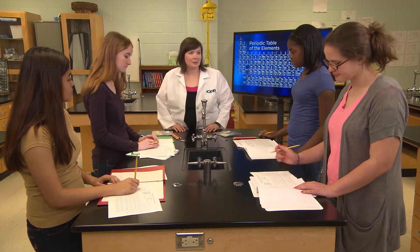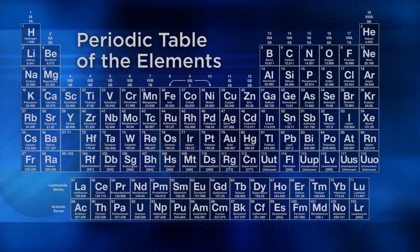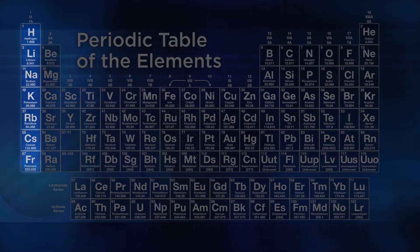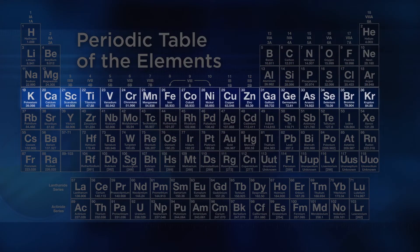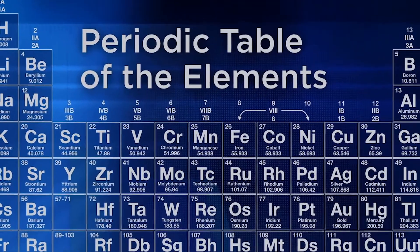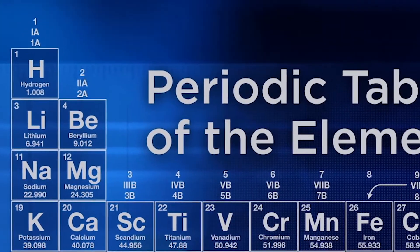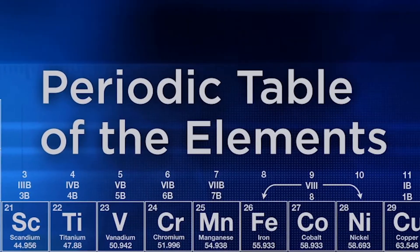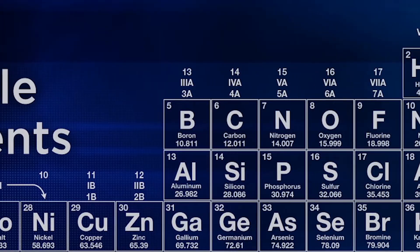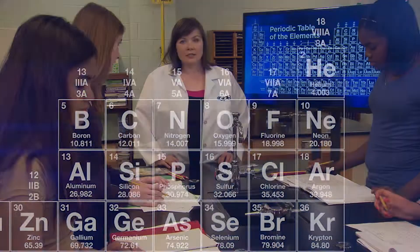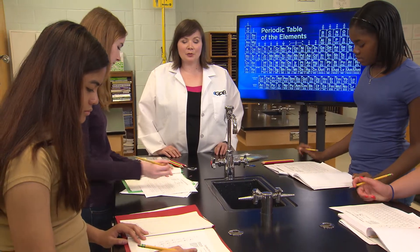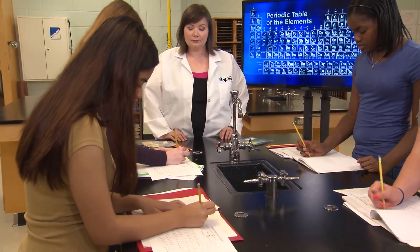Look at your periodic tables. Periodic tables are laid out in columns up and down and rows side to side. Look at the far left column and notice that each column is numbered 1 through 18. Now start at the top left and label each row 1 through 7.